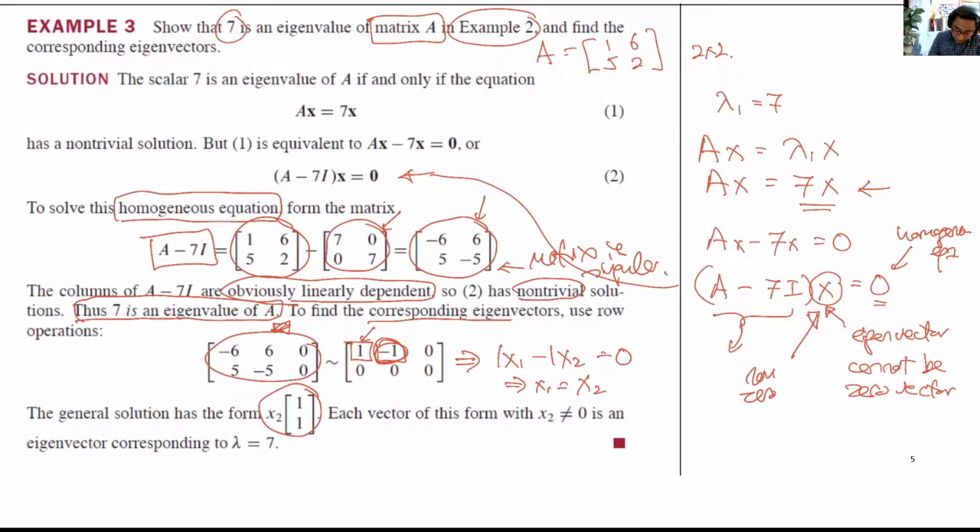So if we can put any value of x₂ here, we will get an eigenvector. Okay, so that's it.